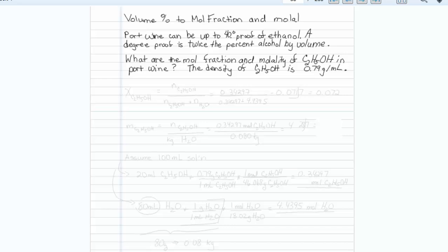This is how to go from volume percent to mole fraction and molality. Port wine can be up to 40 degrees proof of ethanol. A degree proof is twice the percent alcohol by volume. What are the mole fraction and molality of ethanol in port wine? We're given the density of ethanol.